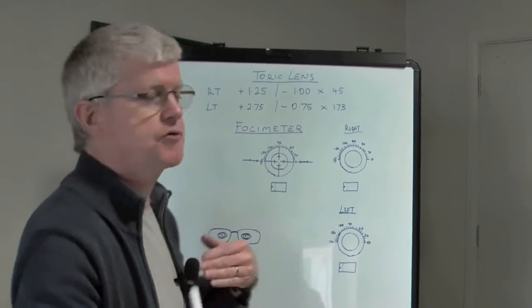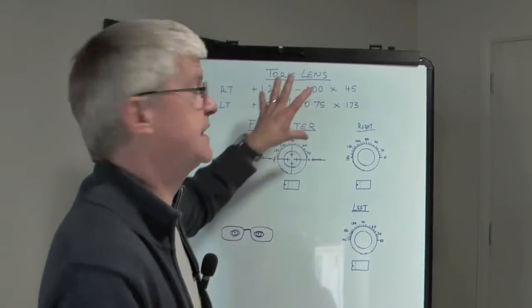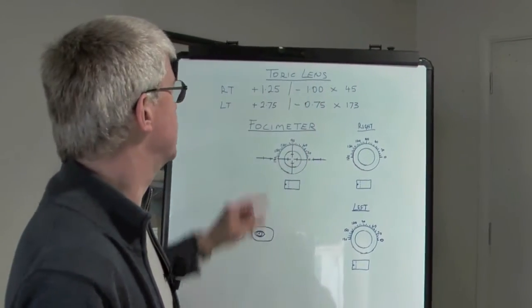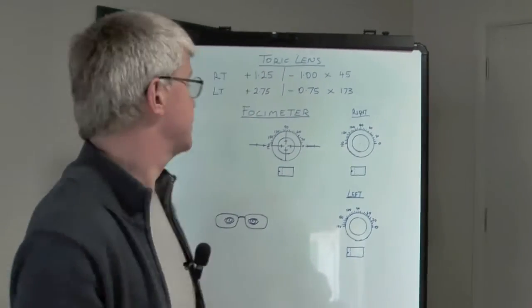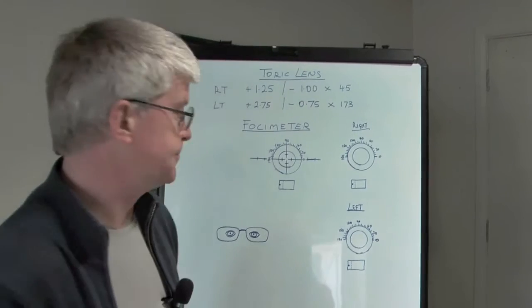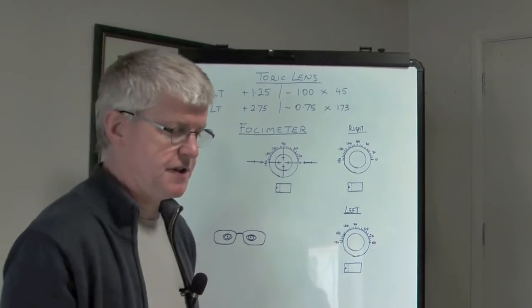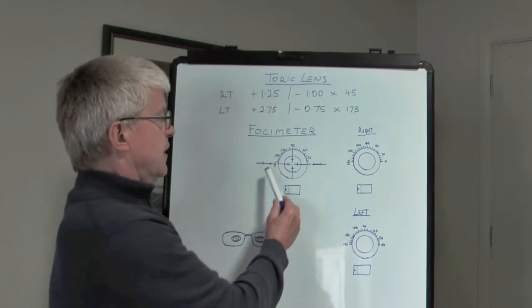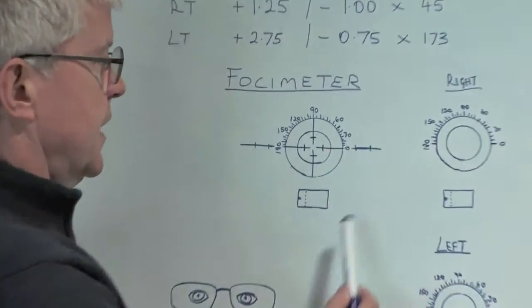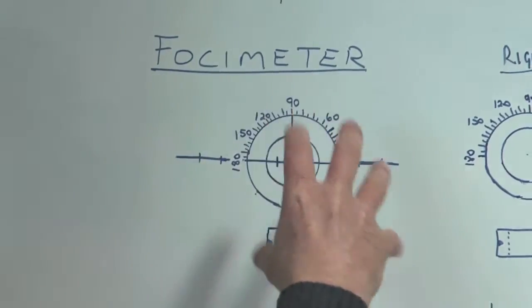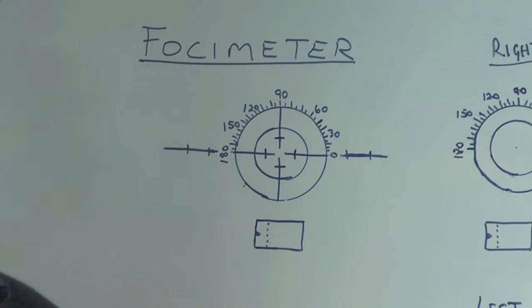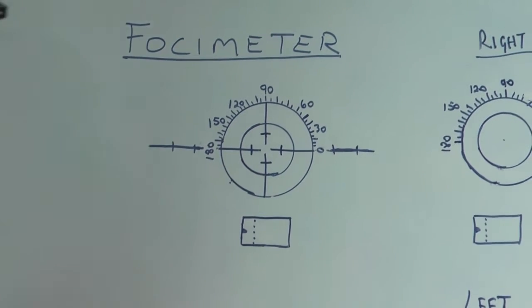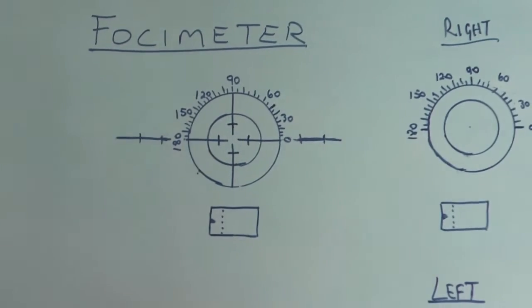We need to go through the process of how to mark these lenses up. It's very important that we learn how to use the focimeter and mark those lenses up accurately. The focimeter measures the focal length of the lens, and by doing so it determines the power.